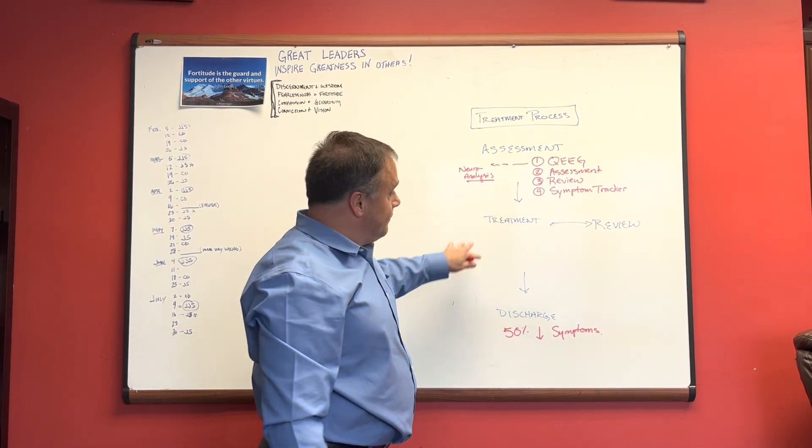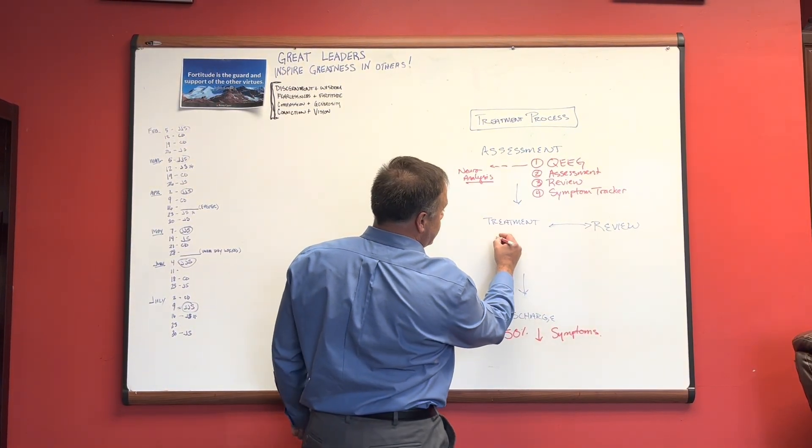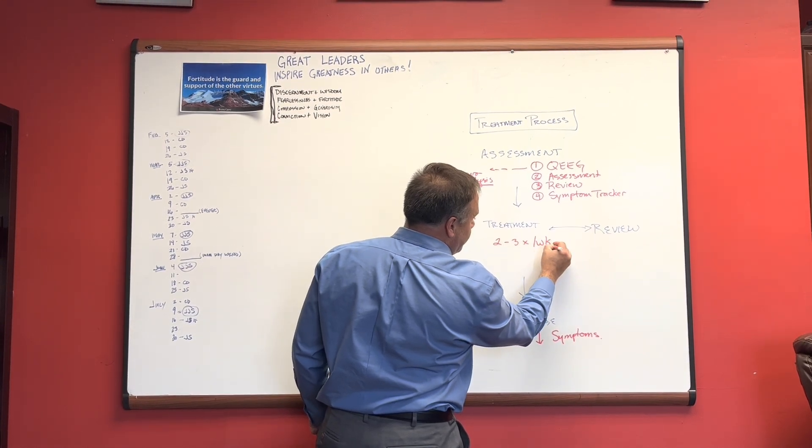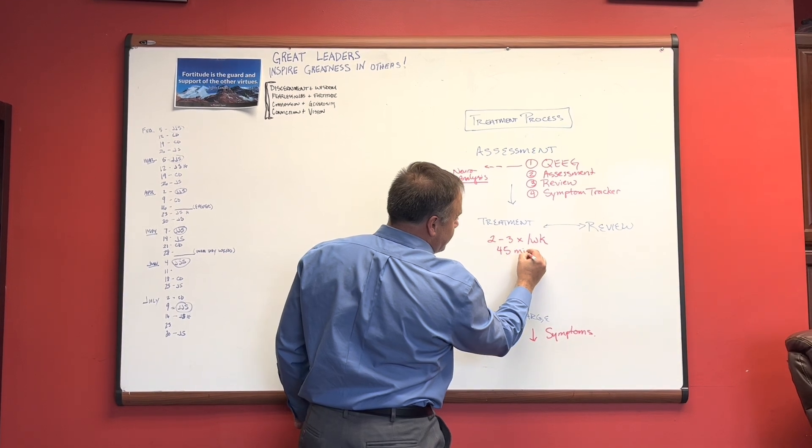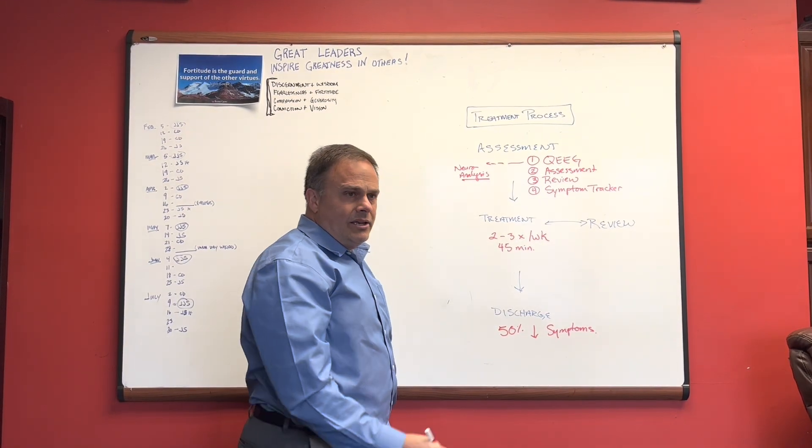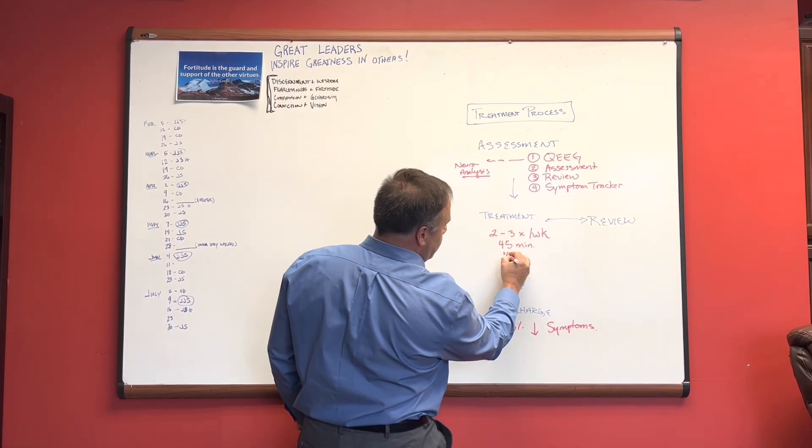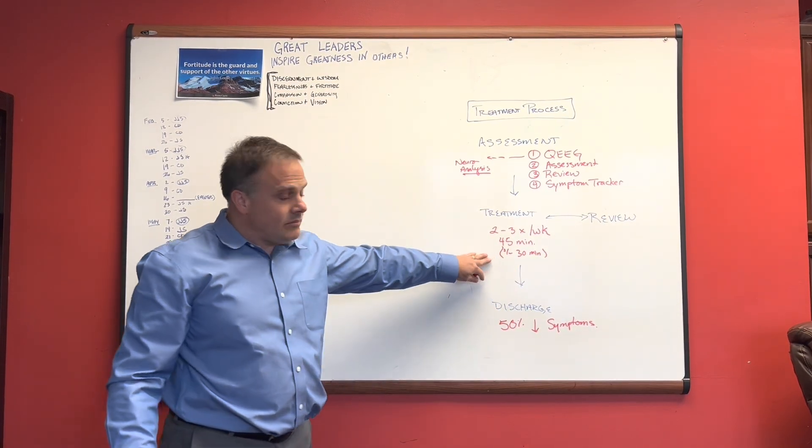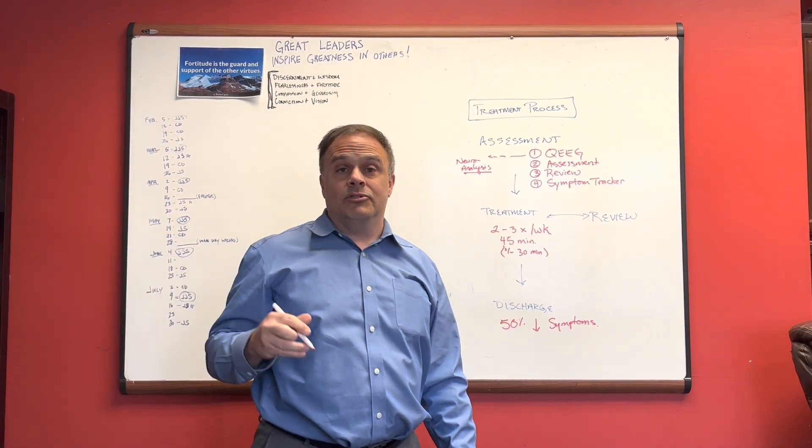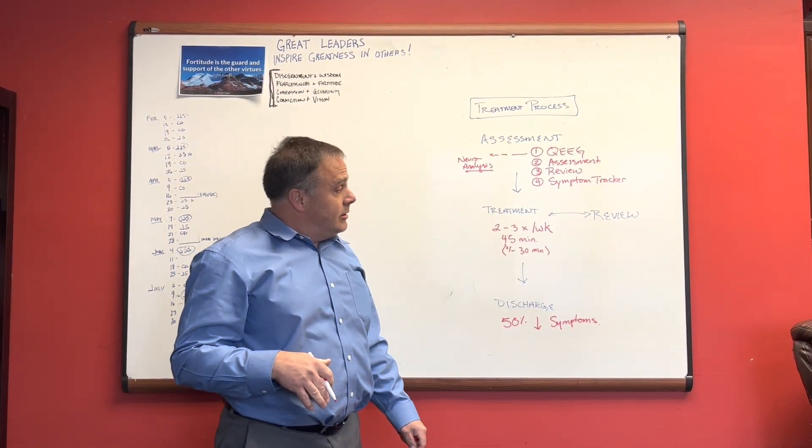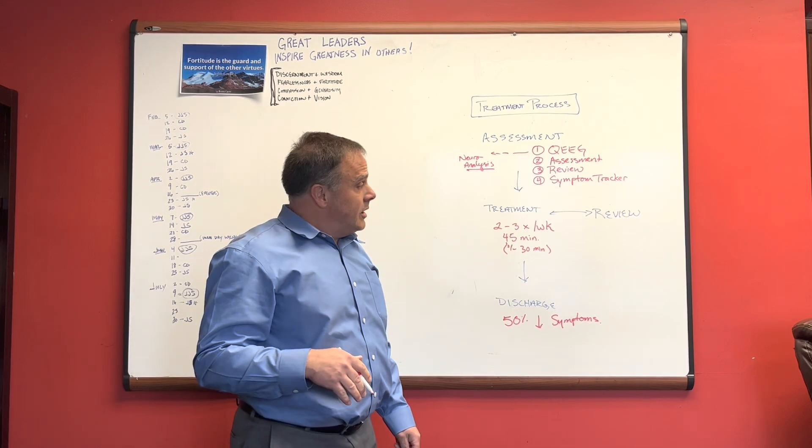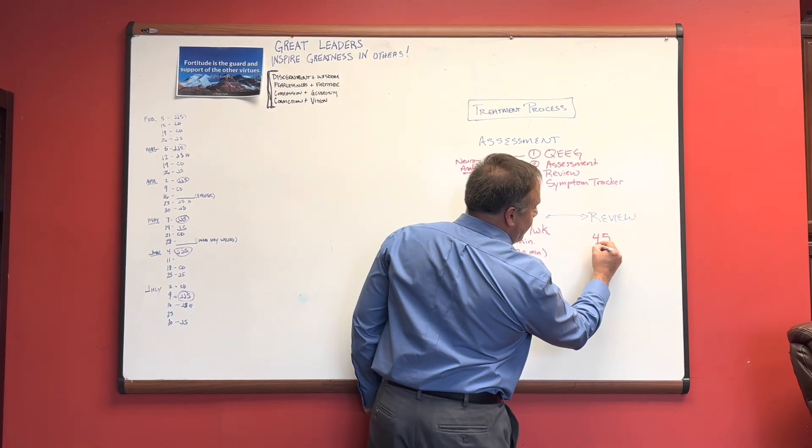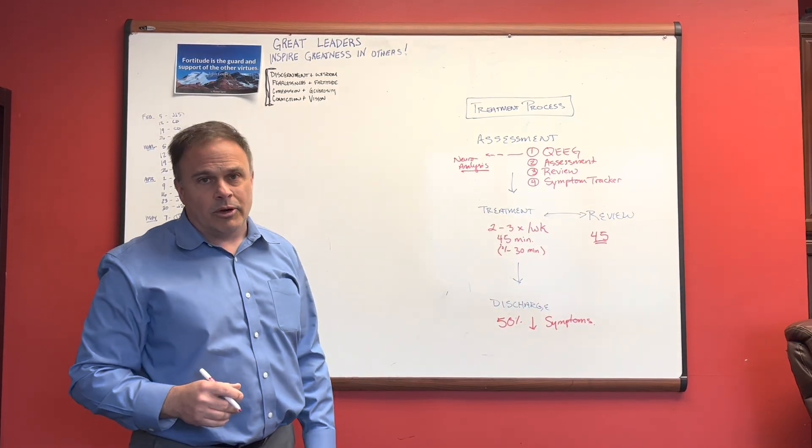Once you get this completed, then we go into the treatment. Treatment is two to three times a week, and each appointment is 45 minutes long. In here, you get about 30 minutes of neurofeedback time, and that's what happens in terms of doing your training. Now people will ask, well, how long do I need to do this? On average, I encourage people to be prepared for 45 treatment appointments.